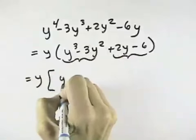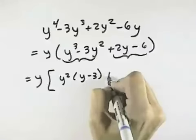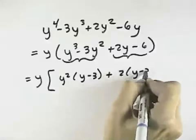in the first two we have a y squared in common, leaving y minus 3. In the second two we have a 2 in common, also leaving y minus 3.